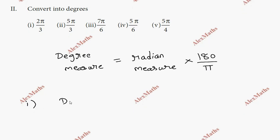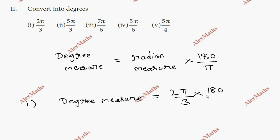Degree measure equals radian measure substituted: 2π/3 into 180/π. The π cancels. 180 divided by 3 equals 60, and 2 times 60 equals 120. So 2π/3 equals 120 degrees.